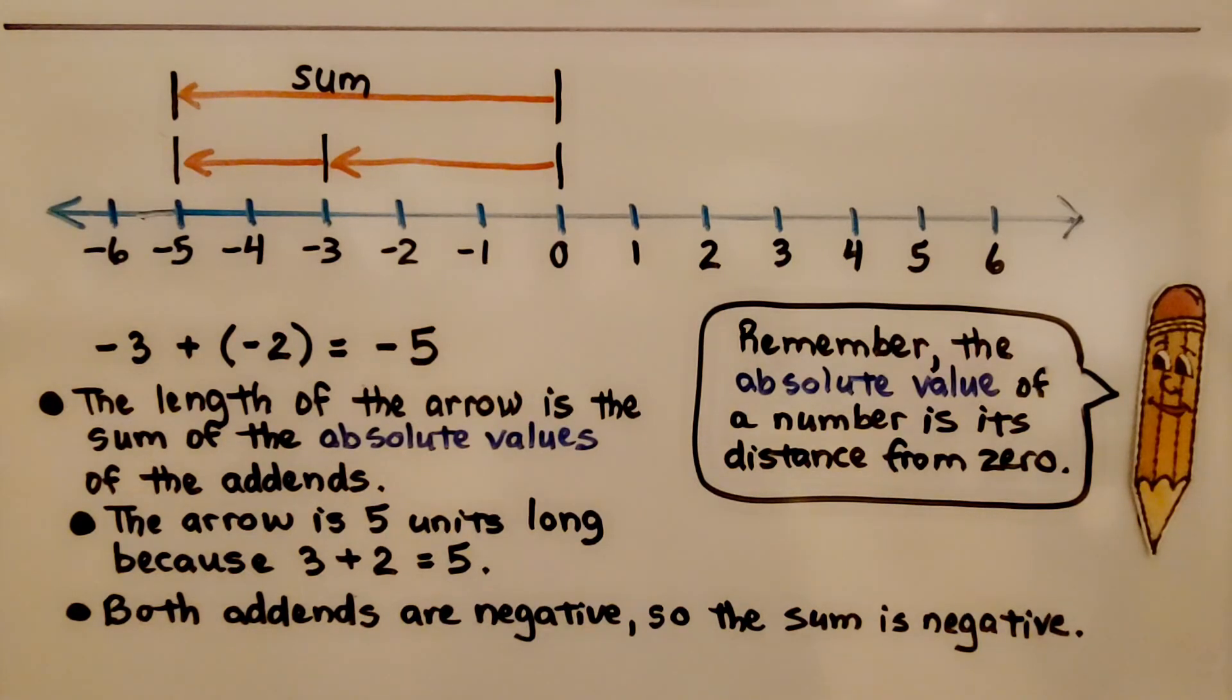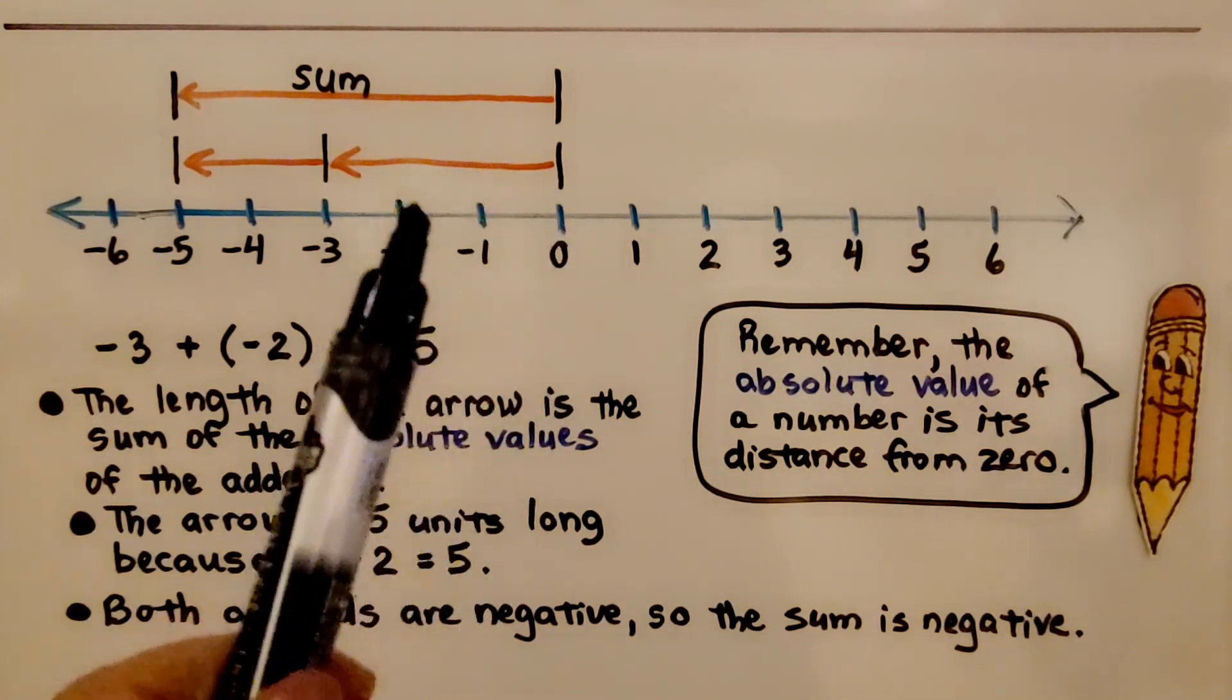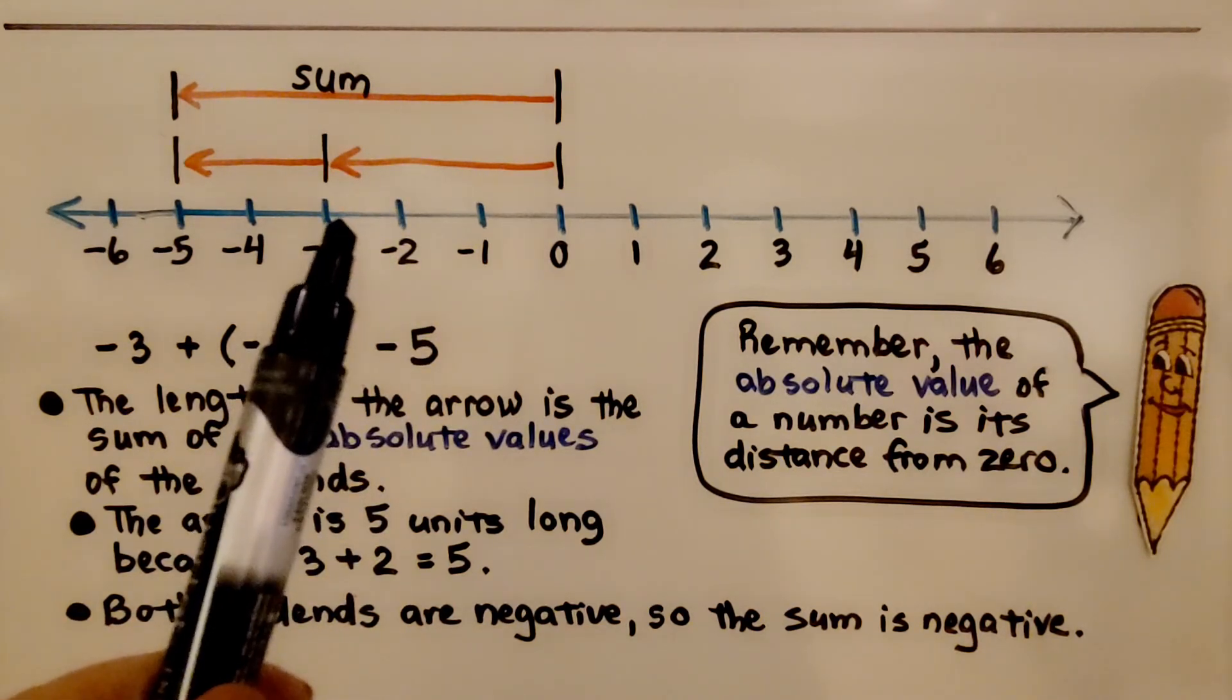Remember, the absolute value of a number is its distance from zero. So the absolute value of negative three is three. It's one, two, three units from zero.